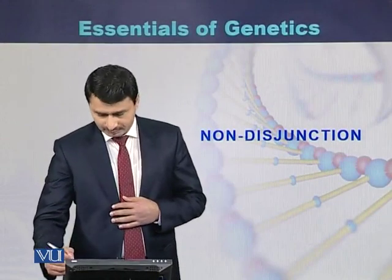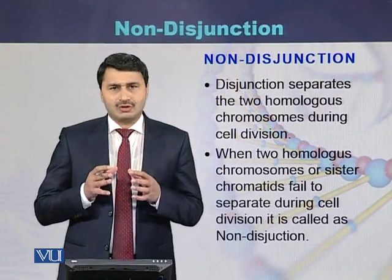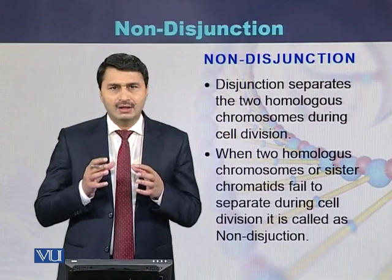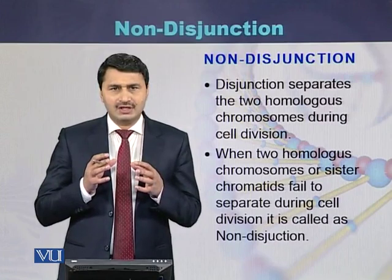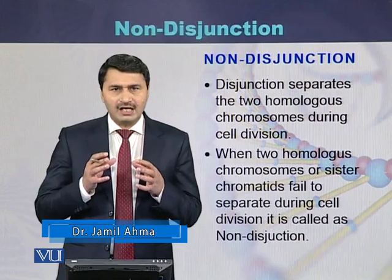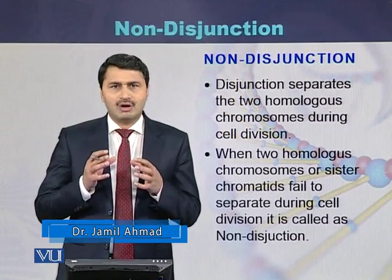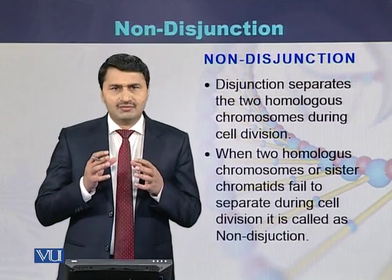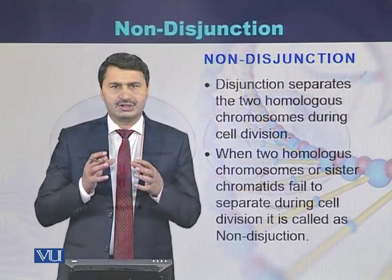Non-disjunction. Disjunction is a process by which homologous chromosomes separate from each other. In mitosis, sister chromatids separate from each other. If the homologous chromosomes or sister chromatids fail to segregate from each other, such a phenomenon is called non-disjunction.